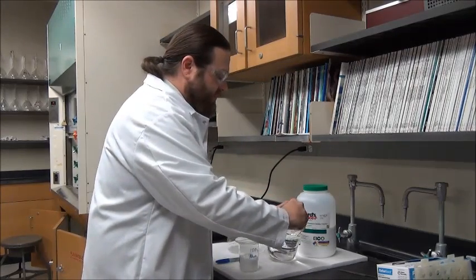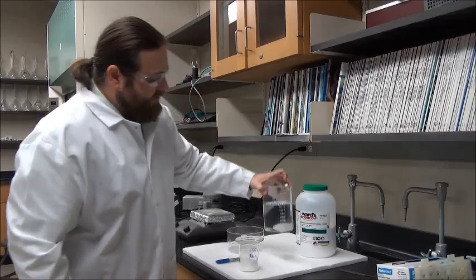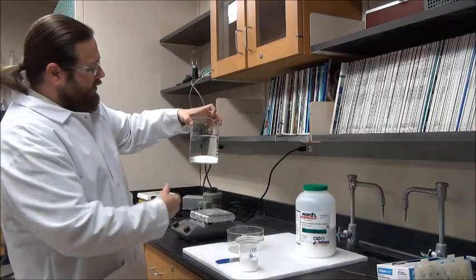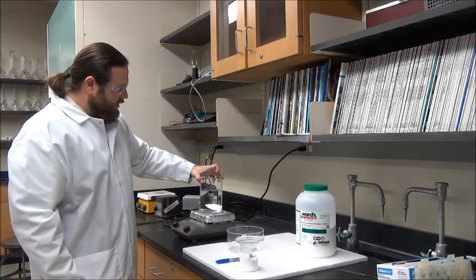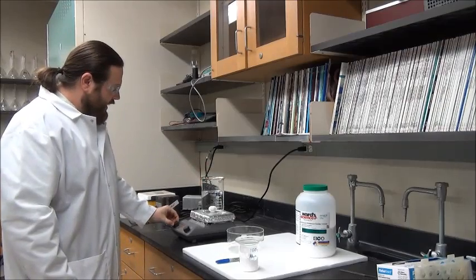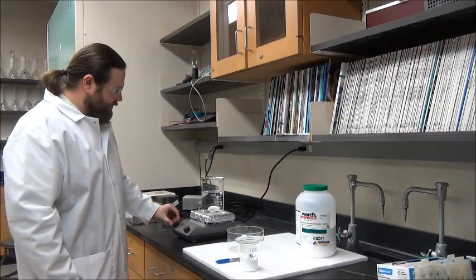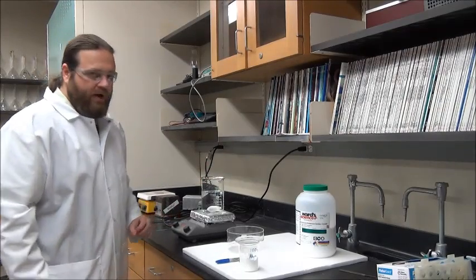We'll go ahead and get this started. The first thing we'll do is add our magnetic stir bar to our water. Here we go, 700 milliliters of distilled water, and I'm going to put that on this hot plate and get this stirring.